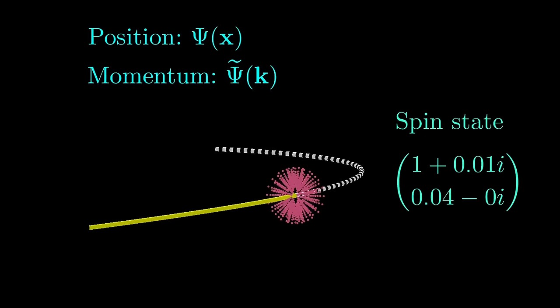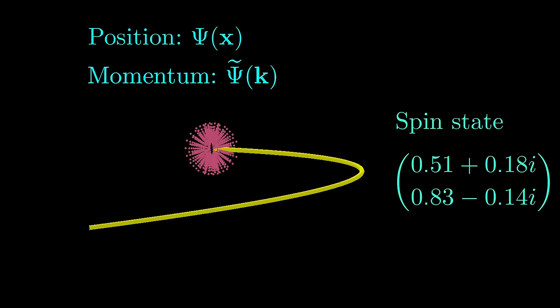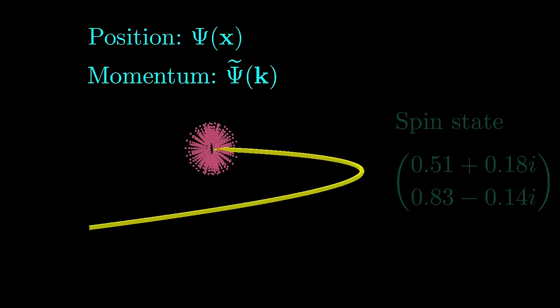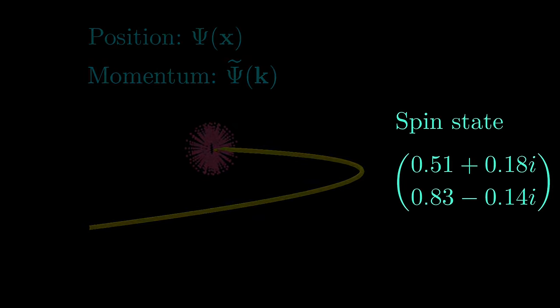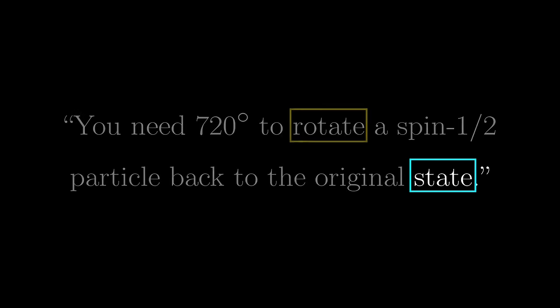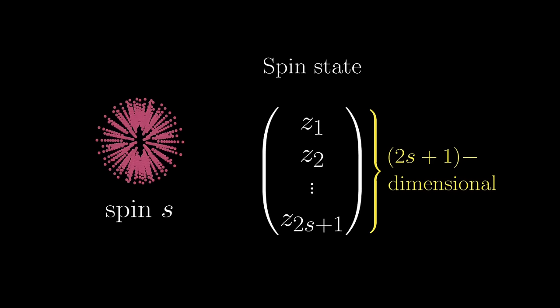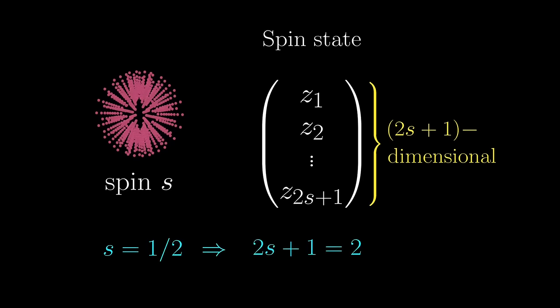Similar to those wave functions, the spin state itself could also evolve with time. But the thing is that knowing how the particle physically moves doesn't necessarily tell you anything about the spin state. It really is a separate intrinsic quantity. This intrinsic quantity is what 'state' meant in the sentence at the beginning. Whenever we say a particle is spin-s, by definition, the spin state is described by a (2s+1)-dimensional complex vector. In the case of s = 1/2, 2s+1 = 2, and so a spin-1/2 particle is described by a 2-dimensional complex vector — say (alpha, beta).